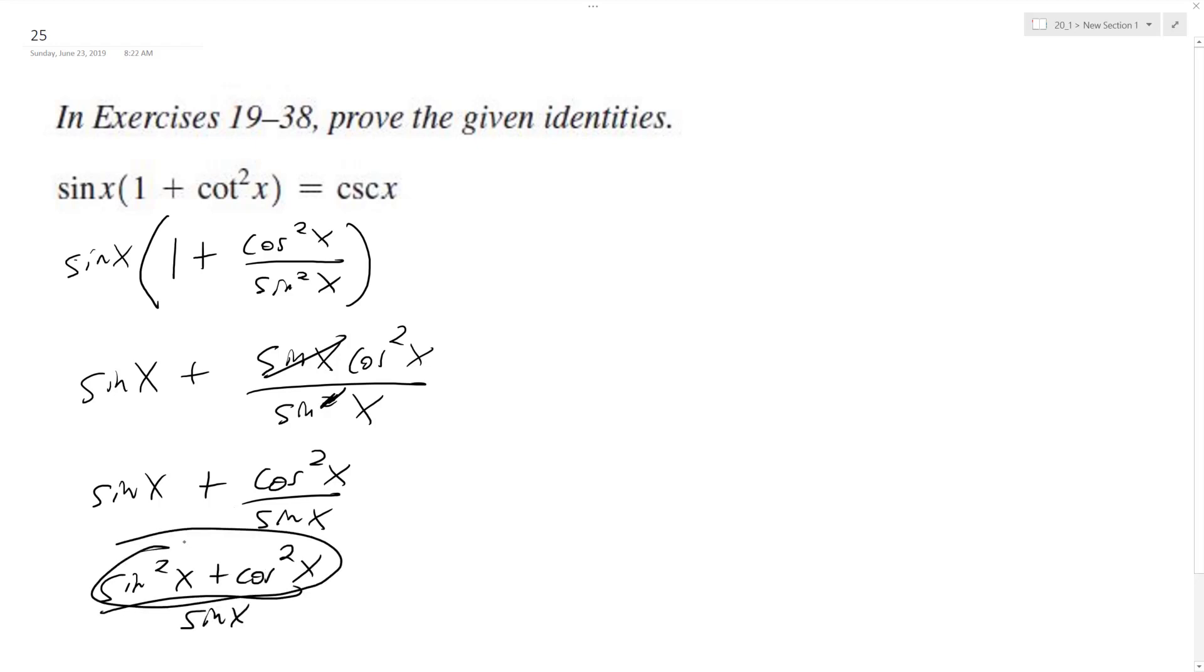So this is a trig identity. It's equal to 1, so we get 1 over sine x. And that's the same thing as cosecant x, which is the right side of the equation.